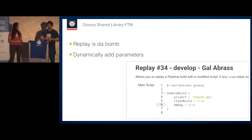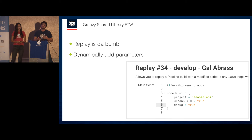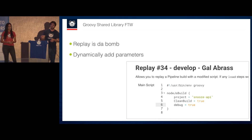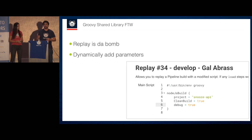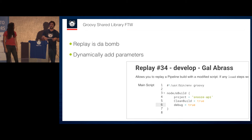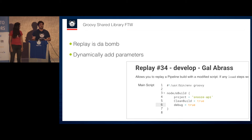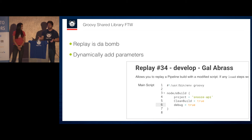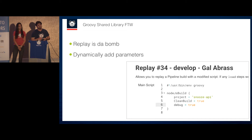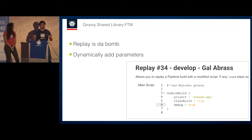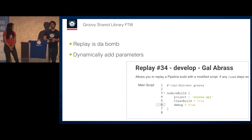Another cool feature: you're probably familiar with the rebuild option for each Jenkins job. When working with a Jenkinsfile, you now have a replay option, which lets you edit the Jenkinsfile just for that build. You can dynamically add whatever parameters your code supports. In this example, we added a clean build flag and a debug flag, meaning that for the next run we'll get extra log messages and the build cache will be deleted before the job starts.